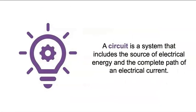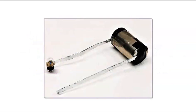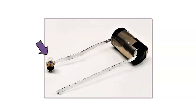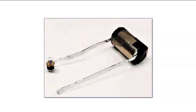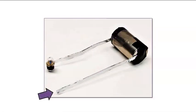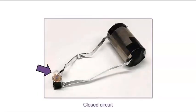A circuit is a system that includes the source of electrical energy and the complete path of an electrical current. Let's identify each component of the circuit. These are strips of aluminum foil. And this is an incandescent flashlight bulb. Do you recognize this? It's a battery with some tape on it. In a closed circuit, electrical energy flows from the energy source through each component and back to the energy source. If I touch the free end of this aluminum foil strip to the center of the light bulb's metal base, what do you think will happen? When the circuit is closed, the light bulb lights up.